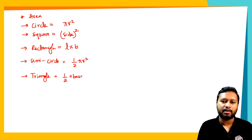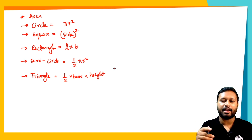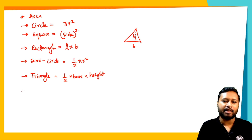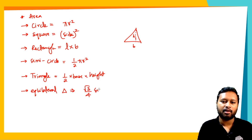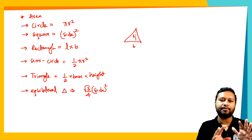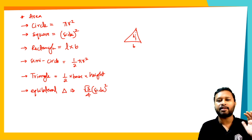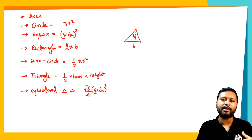For a general triangle, if not specified, the area is ½ × base × height, where height is always drawn at 90 degrees to the base. For an equilateral triangle, the area is (√3/4) × side². These formulas are nothing new — they are just what you studied up to class 10th, so this is just a revision.